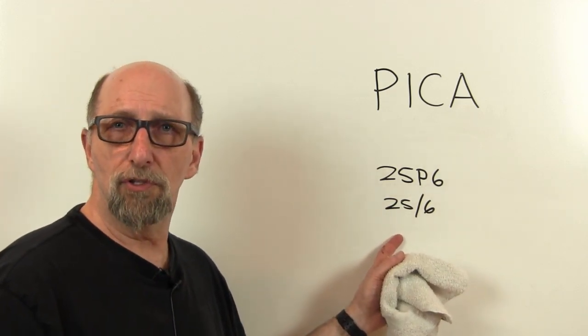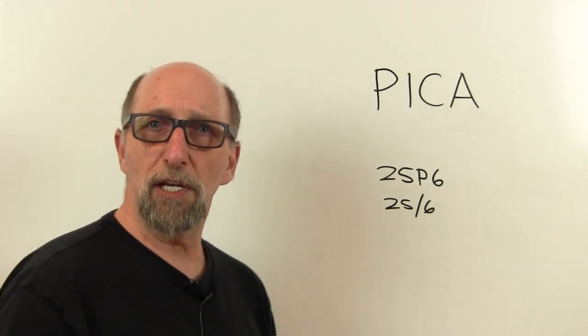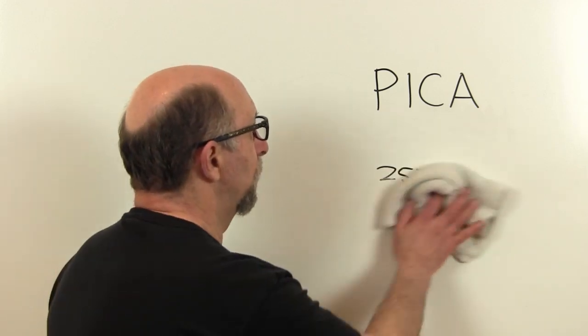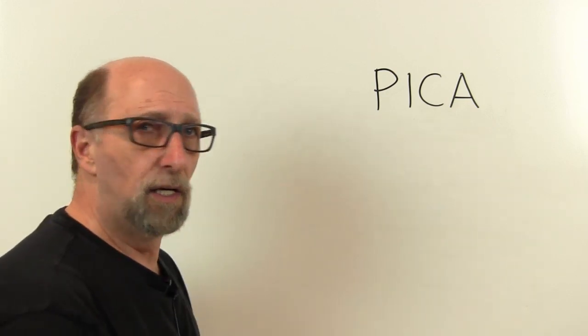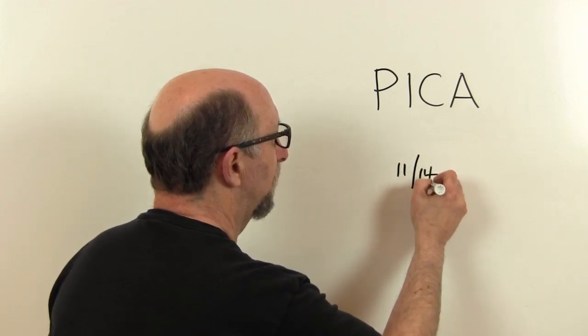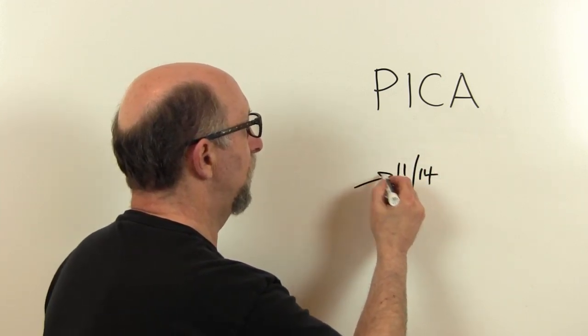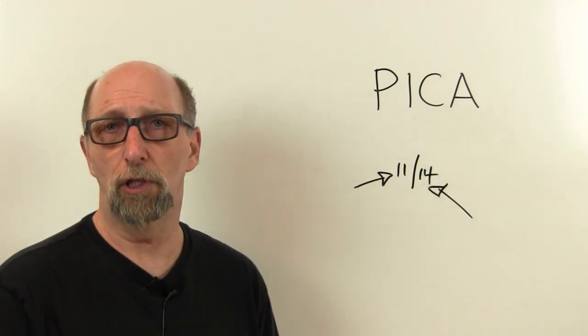If I was going to send instructions to somebody to set some type, I'd write it that way. We do the same thing when we specify type sizes. For instance, if I want 11-point type with 14 points between each line, I'm going to write that as 11 on 14. This is the type size, and that's the amount of space between the lines, or what we call leading.